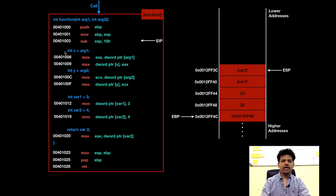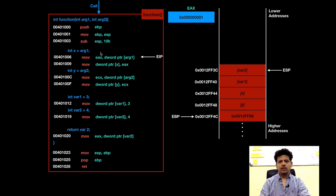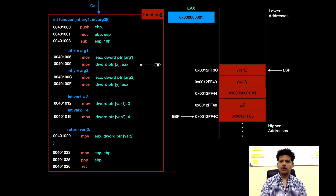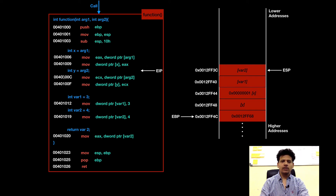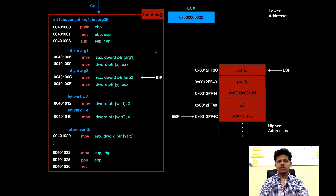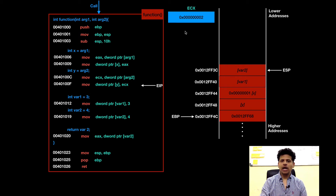Next, the function is saving arg1 into Integer x. For that, the value pointed by pointer arg1 will get moved into EAX first. That got done. Next, EAX will get moved into the address pointed by pointer x. That got done. Next, the function is saving arg2 into y. For that, the value pointed by pointer arg2 will get moved into ECX. That got done. Next, the value of ECX will get moved into the address pointed by pointer y. It got moved.